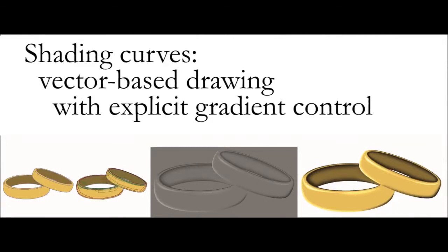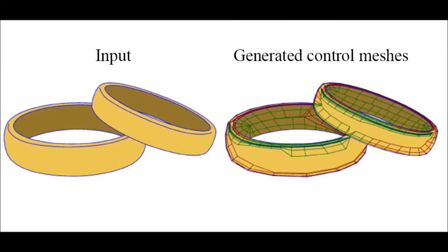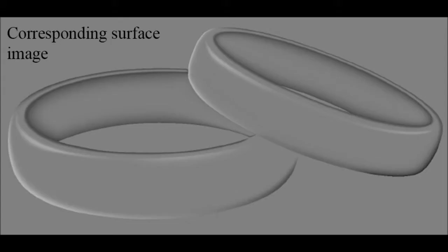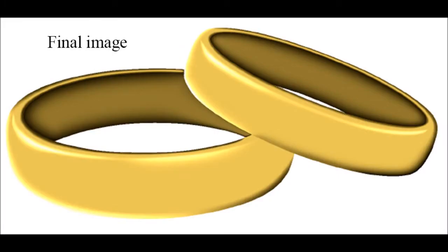We are concerned with image creation for vector graphics, with a particular focus on light and shade. For this, we propose shading curves, which associate shading profiles to each side of the input curve. From these, surfaces are generated and combined with the original flat color image to produce the final result.